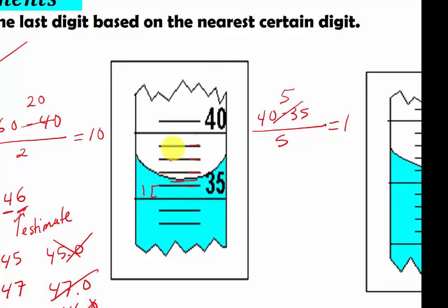So each one of this is equal to 1. 1, 2, 3, 4, 5. Now our mark, our meniscus is right here. So we know for sure it's going to be 35 right here. So it's 36. So we know it's 36 for sure, because we can prove at this line right there.